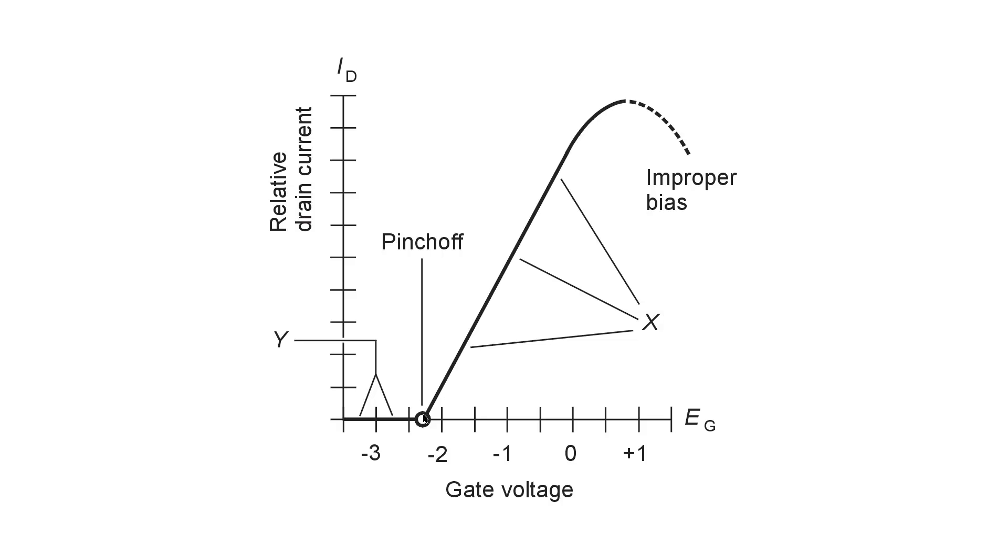Then that is the pinch-off point and you begin to get current in the drain and for a while the current in the drain increases in a linear manner, that is, according to a straight line function in direct proportion to the negative gate voltage up to a certain point.